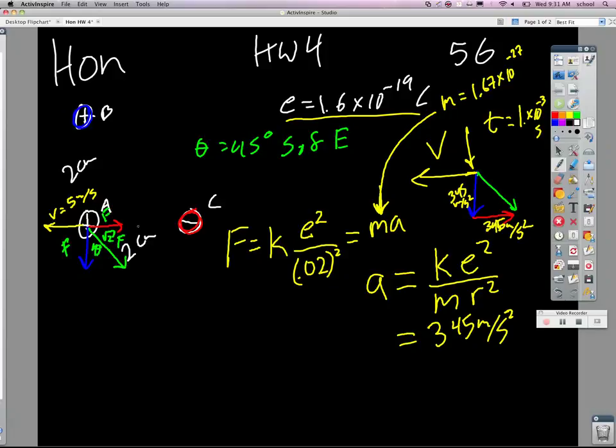Then the second part of the problem said if we give that a 5 meter per second initial velocity to the left, what's going to happen? Before we even go on, just look at the vectors and see the difference.